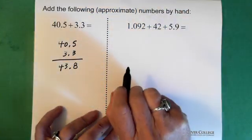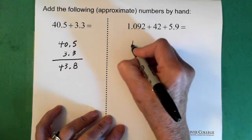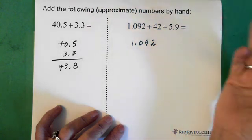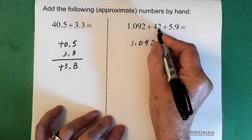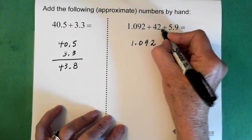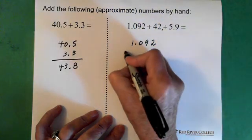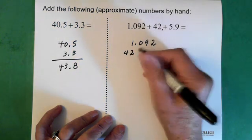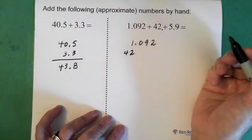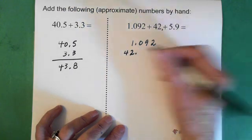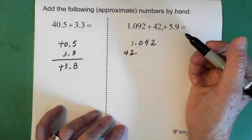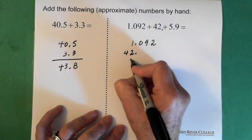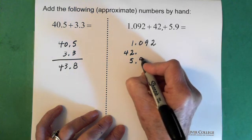Now we're adding up these three numbers. 1.092. And again, we line up the decimals. This number 42, we know that the decimal is here after the 42. So the 42 goes there. Now, we know there's just a decimal there. We don't have to put it in, but we have to be aware of the fact that the 42 has to be the left of the decimal. And 5.9. 5 goes here. .9.